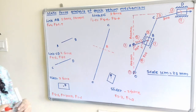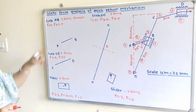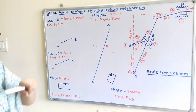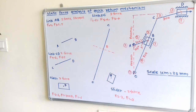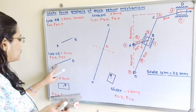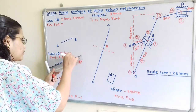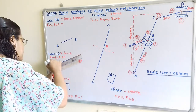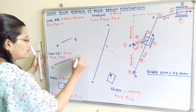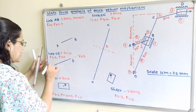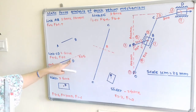We will now draw the free body diagram. We start with link CD, which is a two-force member — the line of action of force is along link CD. Through point D the force is F of 6 to 5, and through point C the force is F of 4 to 5. We identify point C and point D on the free body diagram.